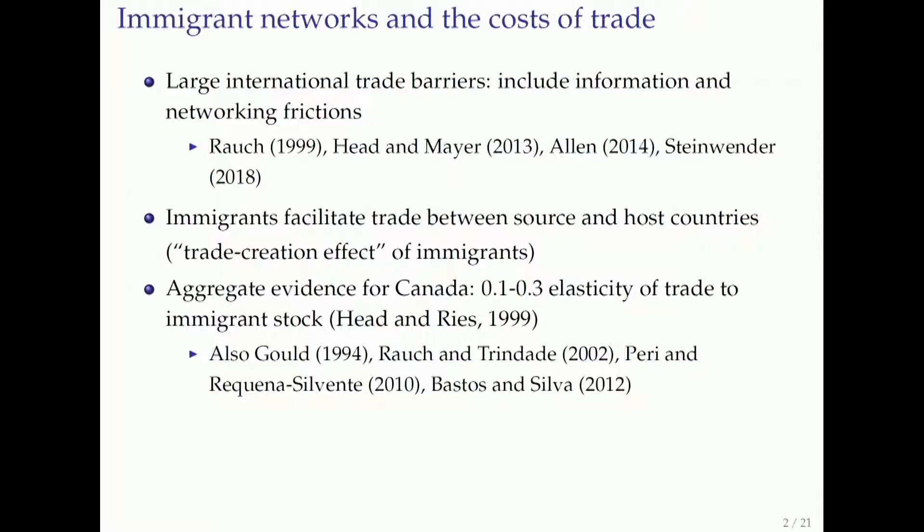The motivation for this paper is that there are very large international trade barriers. Firms face big monetary and physical barriers to export their goods to different countries, and more and more people realize that these barriers also include informational barriers and intangible things — information frictions, networking frictions. Firms have to know the right information and meet the right people in order to make contacts to engage in international trade. There's some work pointing to the idea that immigrants may be one tool to resolve these frictions — facilitating trade between firms in the country where they live and the country where they're from. This is sometimes referred to as the trade creation effect of immigration.